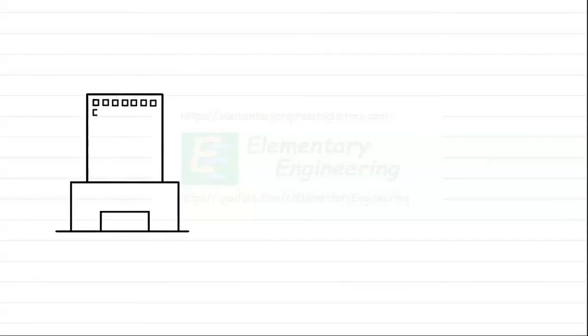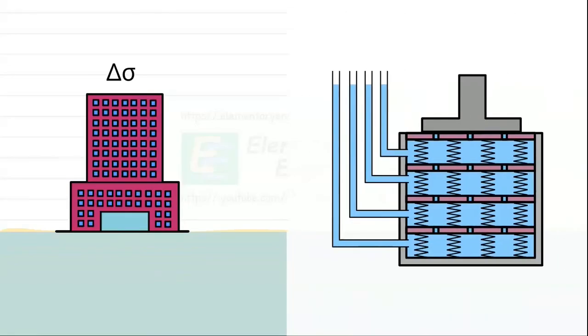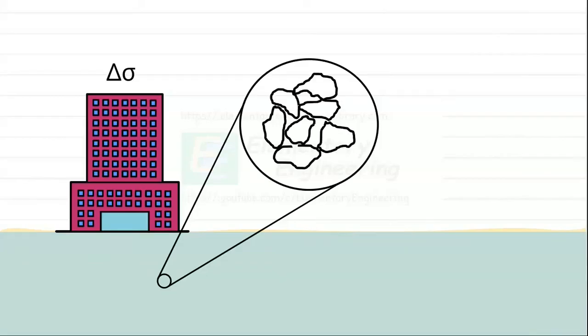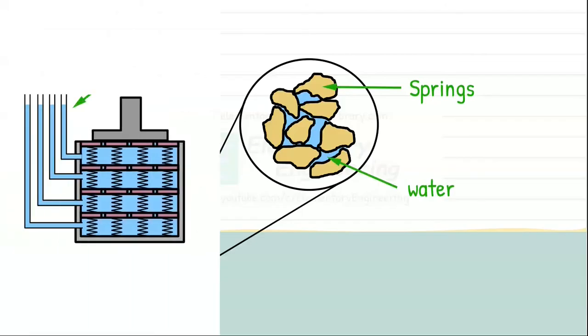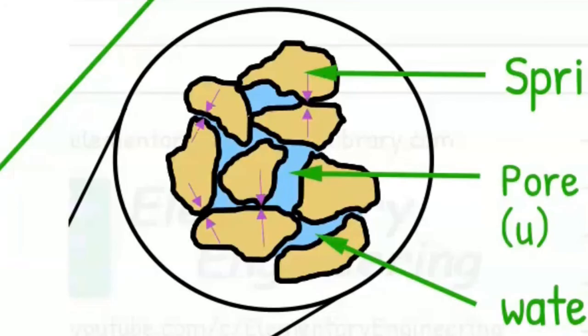When a constant static load, like the weight of a building, represented by delta sigma, is applied to a saturated soil, it behaves similar to that of Terzaghi's spring analogy model. The soil particles act like the springs and the water filling the spaces between the particles is analogous to the water in the cylinder. Just like the piezometer measures water pressure in the analogy, pore water pressure U acts similarly in the soil. The pressure carried by the springs is analogous to the effective stress sigma dash developed in the soil. Effective stress is the internal force that the soil structure, the arrangement of soil particles, can withstand without collapsing.